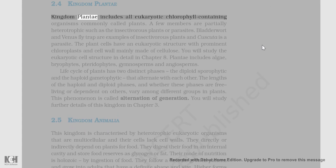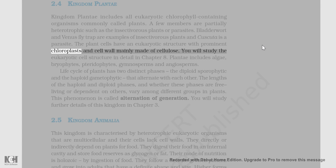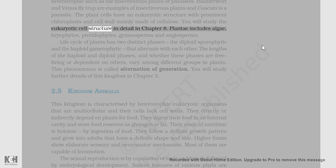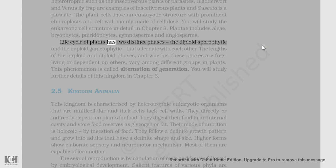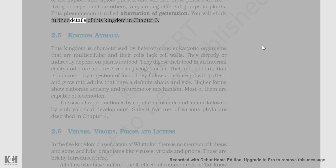2.4 Kingdom Plantae: Kingdom Plantae includes all eukaryotic chlorophyll-containing organisms commonly called plants. A few members are partially heterotrophic such as insectivorous plants or parasites. Bladderwort and Venus flytrap are examples of insectivorous plants and Cuscuta is a parasite. The plant cells have a eukaryotic structure with prominent chloroplasts and cell wall mainly made of cellulose. Plantae includes algae, bryophytes, pteridophytes, gymnosperms, and angiosperms. The life cycle of plants has two distinct phases — the diploid sporophytic and the haploid gametophytic — that alternate with each other. This phenomenon is called alternation of generation.